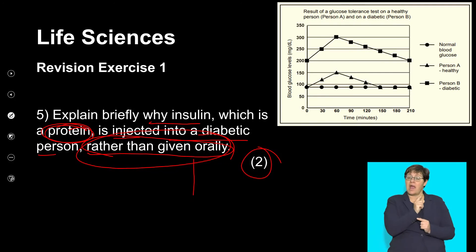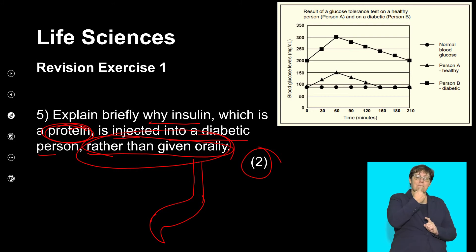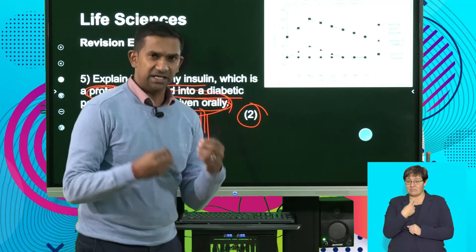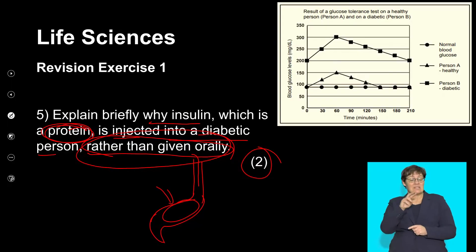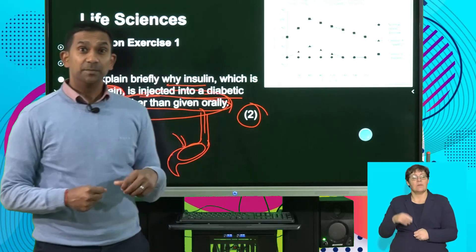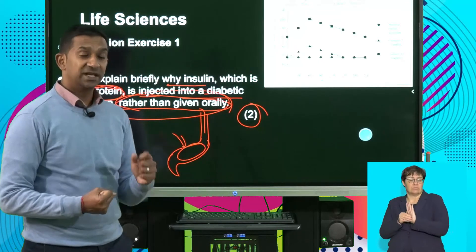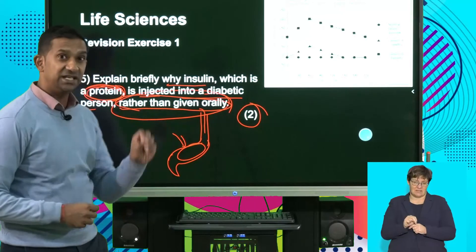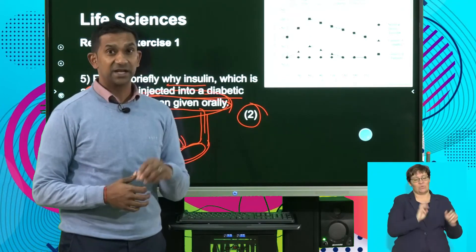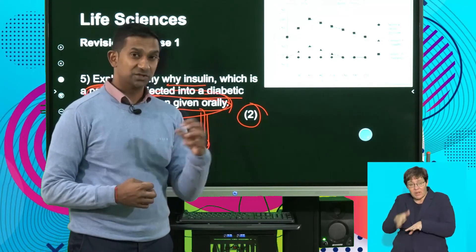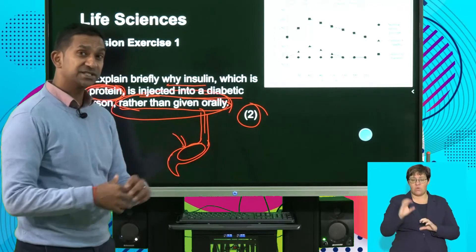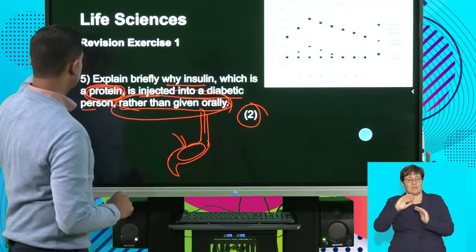Being a protein, we know that protein digestion happens in the stomach. If you orally take insulin, that insulin will go into the stomach and, being a protein, will be digested — making the insulin ineffective. The absorption only happens in the small intestine. So effectively, insulin would be digested as a protein in the stomach and would lose its effectiveness, not being able to assist the cells in absorbing glucose. That's essentially why it is injected directly into the bloodstream, where it can effectively allow cells to absorb glucose, reducing the blood glucose level.